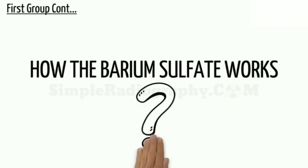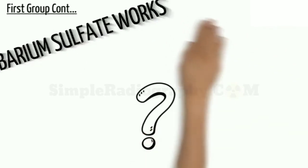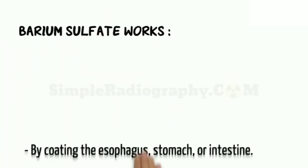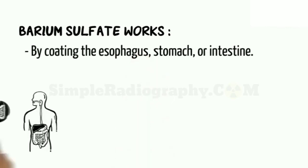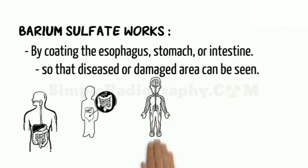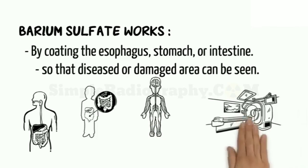How Barium Sulfate works: Barium Sulfate works by coating the esophagus, stomach, or intestine with a material that is not absorbed into the body, so that diseased or damaged areas can be clearly seen by x-ray examination or CT scan.